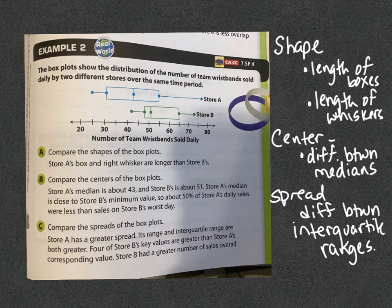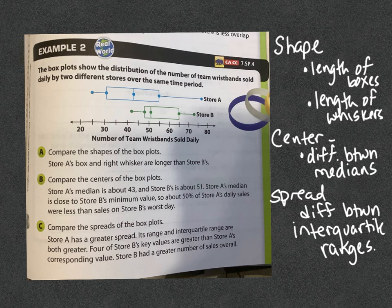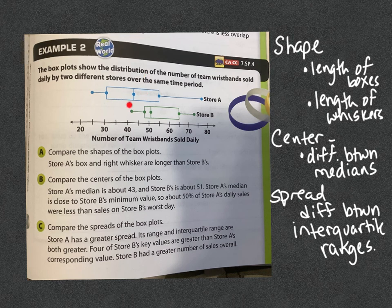Comparing the centers: store A's median is about 43 and store B's is about 51, so 51 minus 43 gives a difference of 8. Store A's median is close to store B's minimum value, meaning about 50% of store A's daily sales were less than store B's worst day. You can see that the majority of store A's sales are centered around the same value as store B's worst day — so store B was clearly doing better overall.